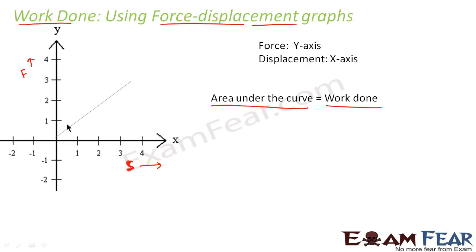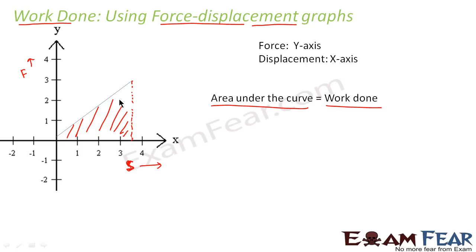Let us suppose this is a straight line — that means as the force applied increases, the displacement is also increasing. So I get a straight line for the force-displacement graph. The area under this curve — if you join this point — will be this area, and this area is equal to the work done.